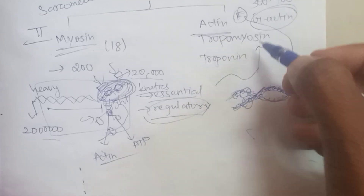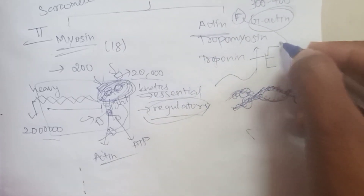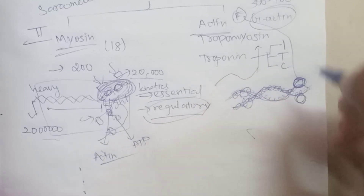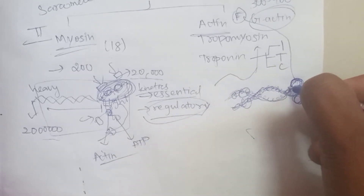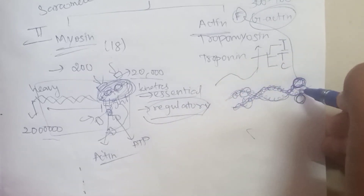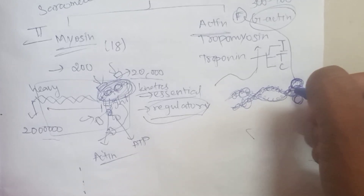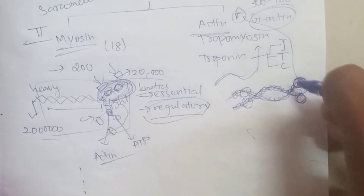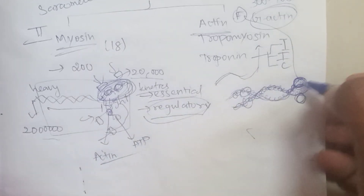In troponin, there are three areas. One is I, one is T, and one is C. The I area binds to F-actin. The T area binds to tropomyosin. The C area binds calcium ion.